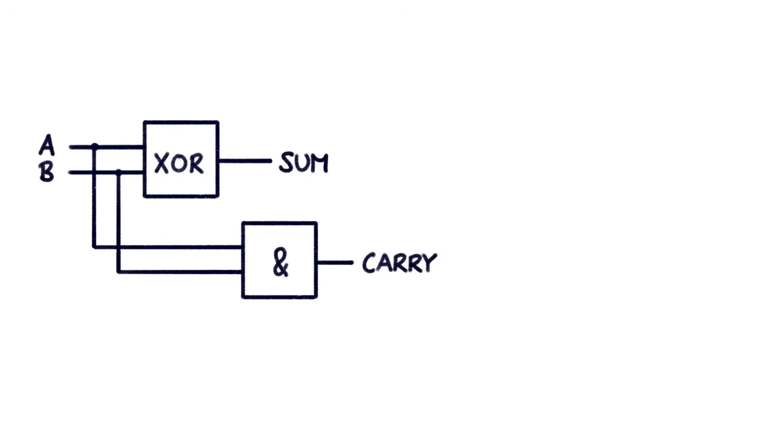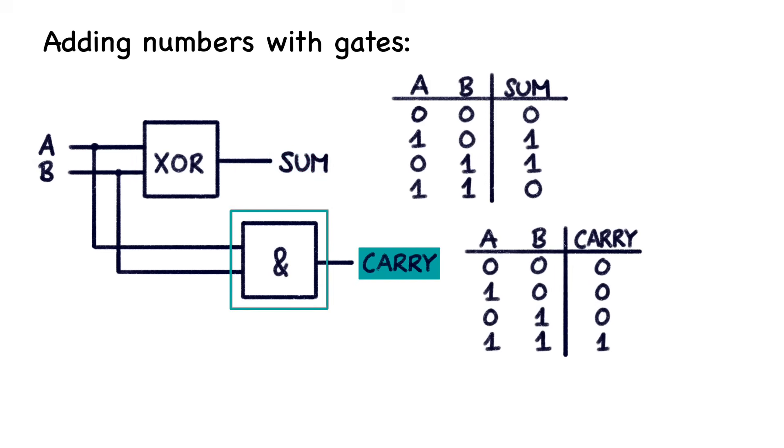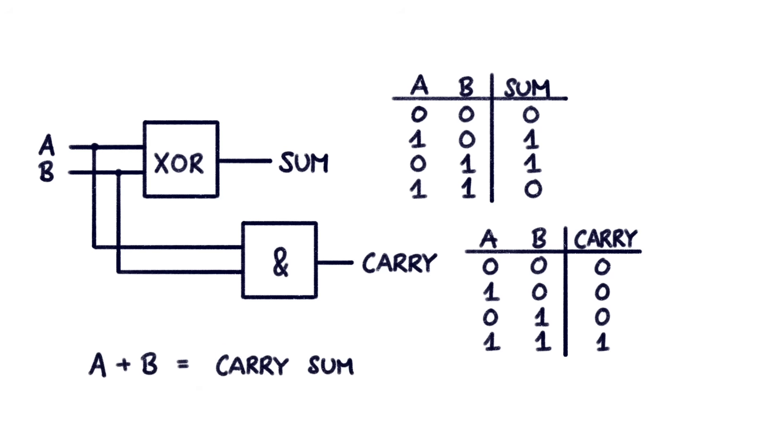To physically implement this addition using the gates we've discussed earlier, we input the bits A and B into both an XOR gate and an AND gate. The XOR gate will provide us with the first digit of the addition, known as the sum, while the AND gate will produce the second digit, referred to as the carry. We can briefly convince ourselves that this gives the expected result. When both A and B are set to 1, the XOR gate outputs 0, while the AND gate outputs 1. The result reads 1,0 as expected. Feel free to pause the video here and try the other three input combinations to see that this design functions properly.